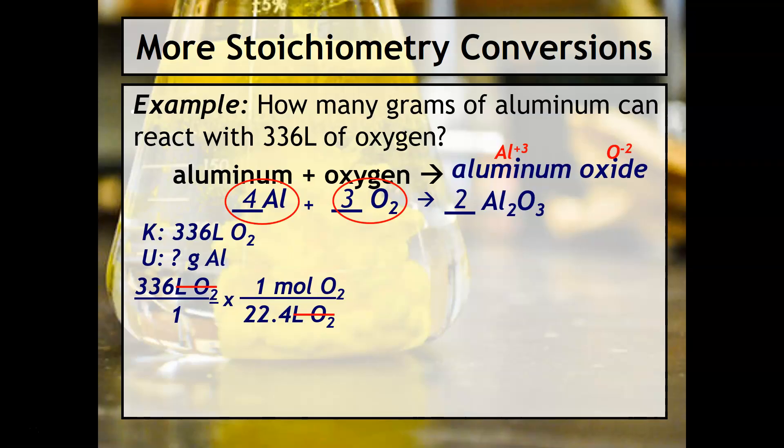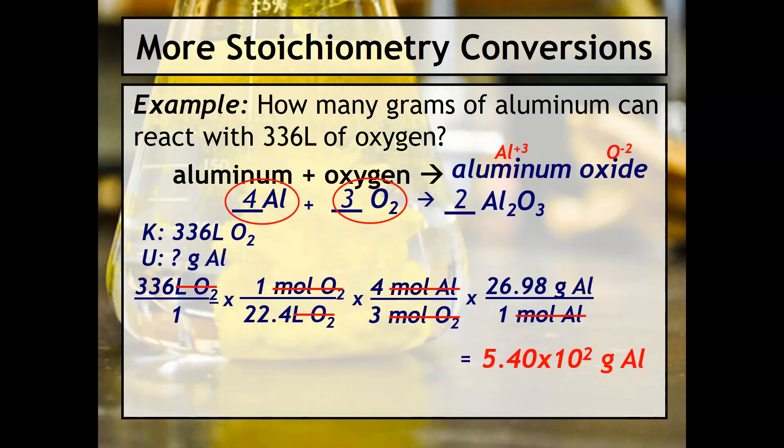We want to know how many grams of aluminum, so remember just like yesterday the second step is always the mole ratio step. So the ratio is between the aluminum and the oxygen, so that's why it'll be three moles of O2 to four moles of aluminum. Oxygen and oxygen divide out, and the last thing is since the question is asking about grams of aluminum we're going to have to use the molar mass. Don't forget to divide by everything on bottom - that's a really common mistake that students make. And your answer should be five point four zero times ten to the second grams of aluminum.